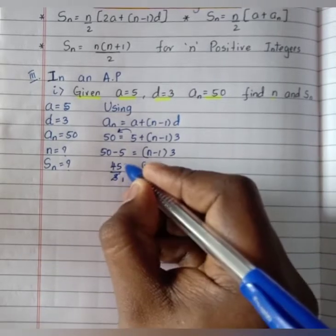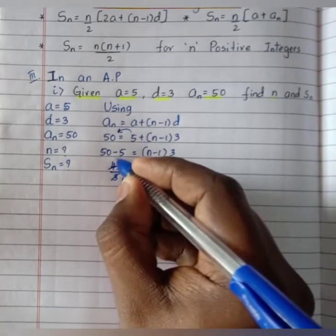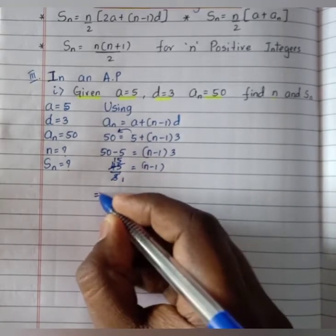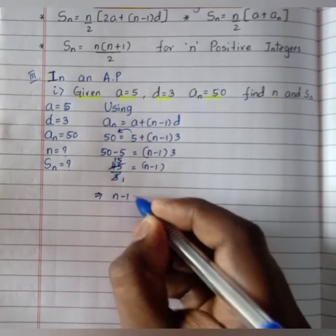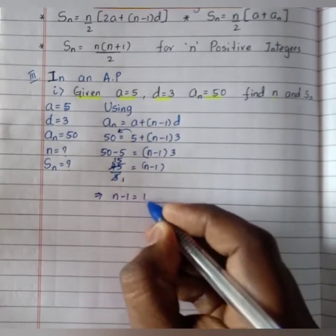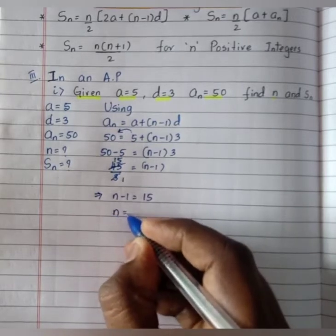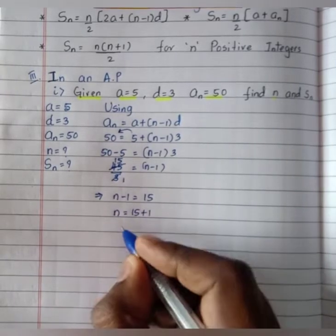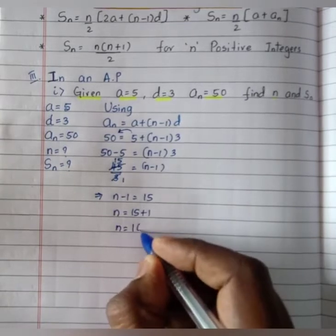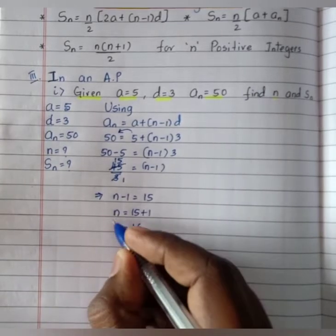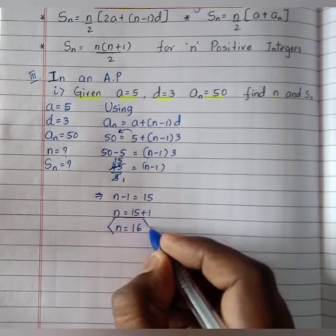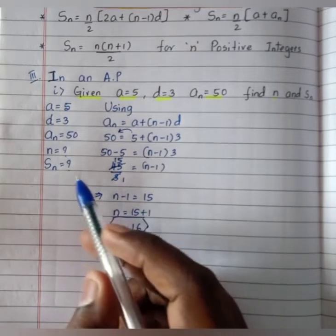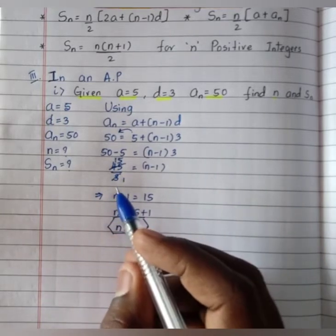So 45 divided by 3 equals n minus 1. Since 3 times 15 is 45, we get n minus 1 equals 15. Shifting minus 1 to the LHS it becomes plus 1, therefore n equals 15 plus 1 which equals 16. The value of n is 16.